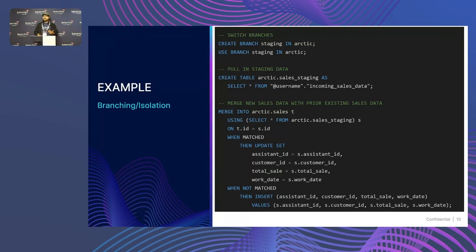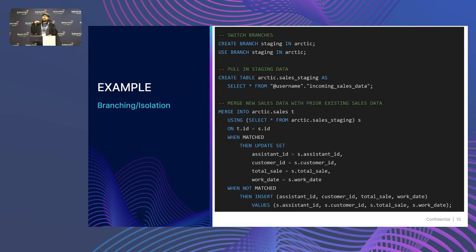Let's talk about branching and isolation. Imagine a company that handles virtual assistants — we have a roster of virtual assistants, a bunch of customers who hire them, and we track sales. So we have three tables: a sales table and two dimension tables, assistants and customers. In the first couple of queries, I'm creating a branch — I plan on ingesting some data, so I create a branch for that ingestion. Then I switch my context over to that branch using the USE BRANCH statement, so any query going forward occurs on that branch. Then I pull in data using a CTAS statement into a staging Iceberg table, and run an upsert via a MERGE statement — updating records when IDs match, inserting when they don't.